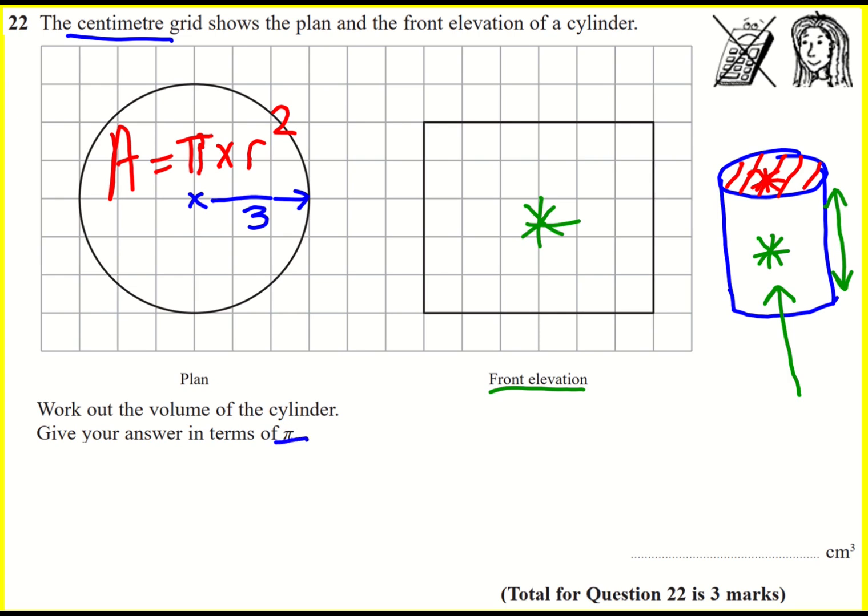Now it tells us to give our answer in terms of pi, and of course because it's not a calculator paper, we can't get an exact value here. But the area is pi multiplied by that radius squared. Now that radius squared would be three squared. So three squared is nine, so pi multiplied by nine.